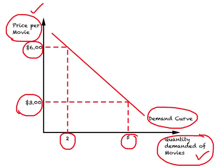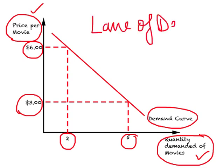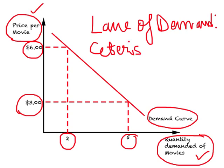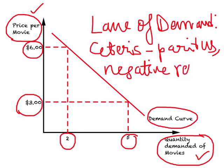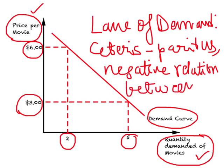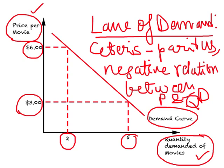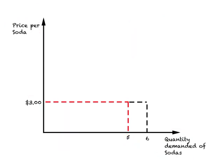This demand curve is downward sloping, and in a way this is a rigorous proof of the law of demand. The law of demand simply states that ceteris paribus there is a negative relationship between price and quantity demanded of the same product. So this is a rigorous proof as to why the demand curve is downward sloping.